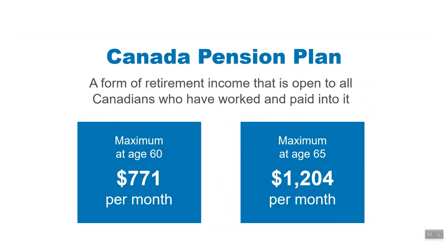The standard age for beginning to receive your CPP pension is the month after your 65th birthday. However, you can take a reduced pension as early as age 60 or begin receiving an increased pension after age 65. The amount of your pension will depend on how much and for how long you've contributed and on your age when you want your pension to start. To qualify for the maximum CPP, an individual must generally have contributed on actual earnings equal to the year's maximum pensionable earnings for at least 39 years and begin receiving payments at age 65 or later.